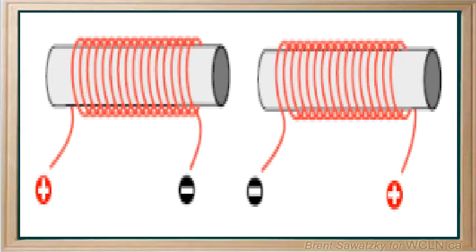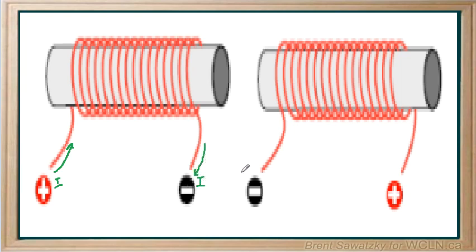Let's walk through a method to solve this problem: identifying the poles and then what would happen to these two magnets. First, let's identify the direction of our current — going from our positive pole to the negative. Every time we write that we smile, because we know that the electrons are in fact going the other way. But there we go, our current.